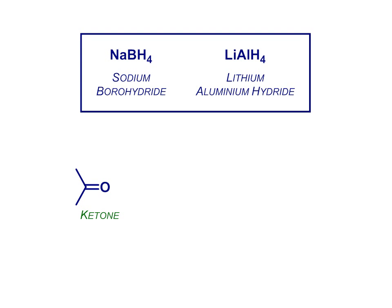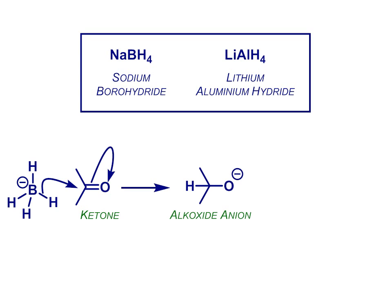So reaction with a hydride reagent, like sodium borohydride or lithium aluminium hydride, which deliver nucleophilic hydrogen, the equivalent of H-, proceed as follows. Attack of that hydride nucleophile at the carbonyl carbon, weakening and breaking the pi bond. The electrons move onto the oxygen to give an alkoxide intermediate, which is then protonated during the workup.